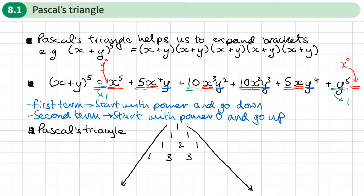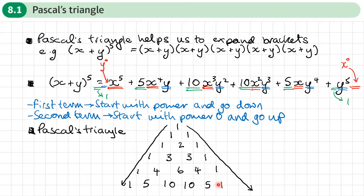Let's move down to the next row. Again, ones on the outside. One plus three gives four, three plus three gives six, and three plus one gives four — giving us 1, 4, 6, 4, 1. Next row: ones on the outside, one plus four gives five, four plus six gives ten, six plus four gives ten, four plus one gives five. Do you recognise those numbers? Those were the coefficients of our expansion: 1, 5, 10, 10, 5, 1.